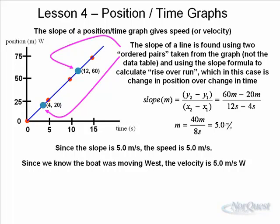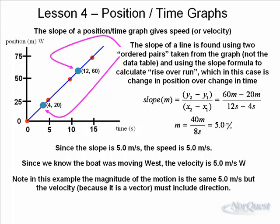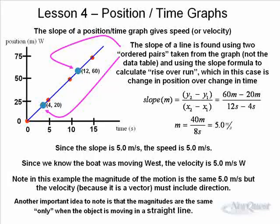Since the slope is 5.0 meters per second and the boat was moving west, the velocity is 5.0 meters per second west. In this example, the magnitude of the speed and velocity are the same, but velocity must also include direction. The magnitudes are only equal when the object is moving in a straight line. As soon as we bend left or right, the speed will be greater than the velocity, because as we change direction, we lose some of the magnitude of the velocity. We'll discuss that more in circular motion.